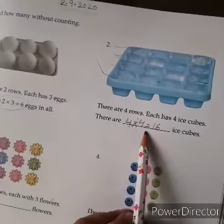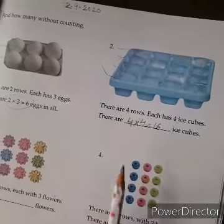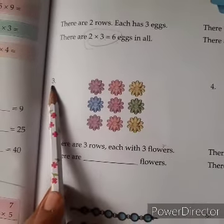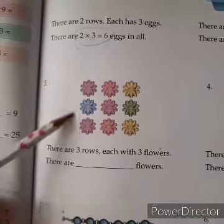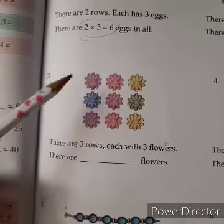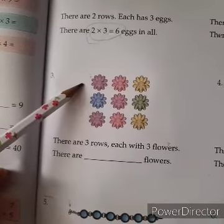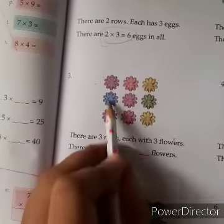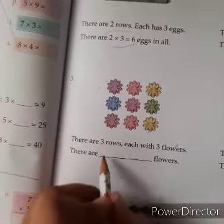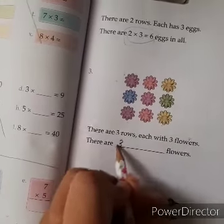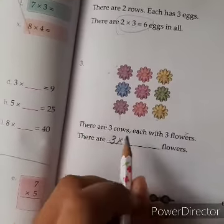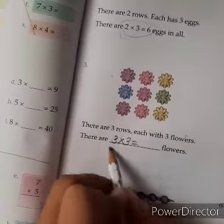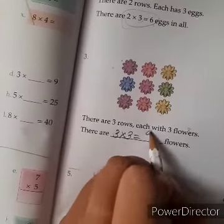How fast our answer has come! Four fours are sixteen. Now come here. Three, how many rows? One, two, three. And each row has how many flowers? One, two, three. So we write the number of rows first. Three rows into three flowers in each row. Three threes are nine.